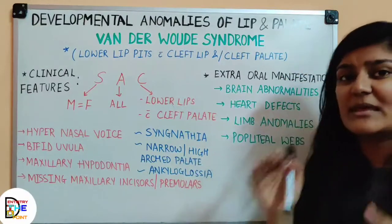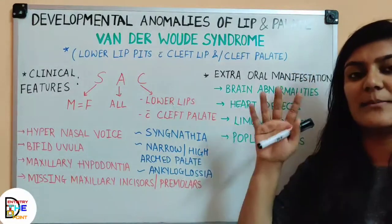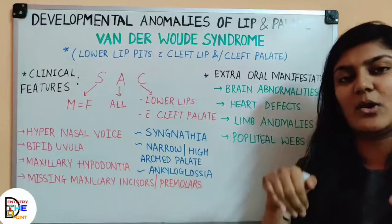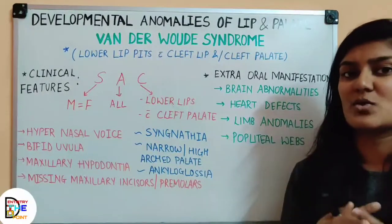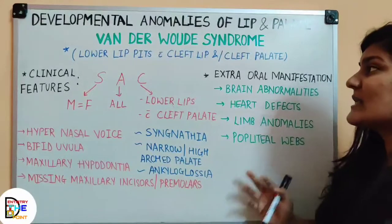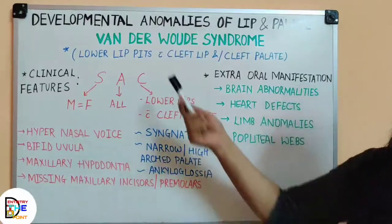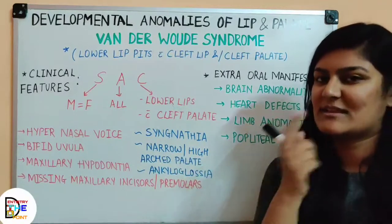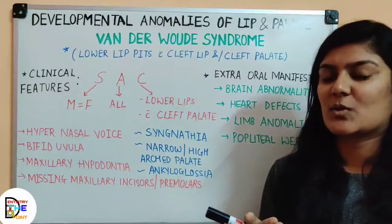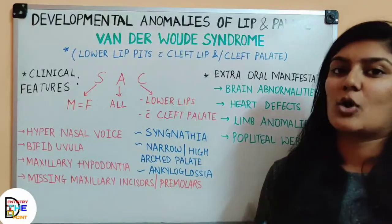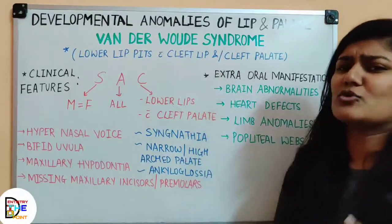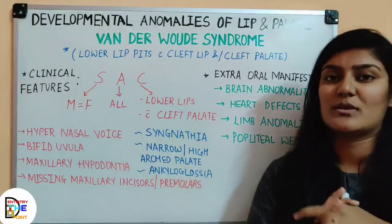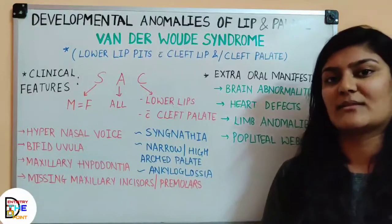To remember the extra-oral features: brain, heart, limbs, and popliteal webs. Regarding treatment, there is no specific treatment. Since the lip pits don't look aesthetically pleasing — unlike dimples — aesthetic surgery can be performed to address the pits. Cleft lip and cleft palate are managed surgically. So the two main treatment approaches are aesthetic surgery for the pits and surgical correction of cleft lip and palate. That is all about Van der Woude syndrome.